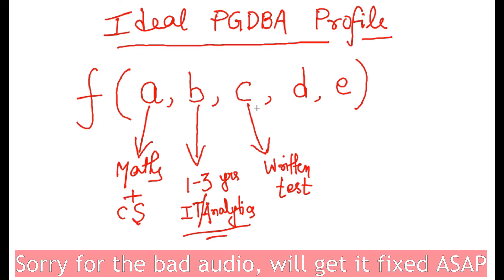The fourth variable 'd' is interview performance. Interview performance is also a variable which will govern the chances of your selection.